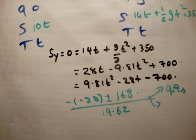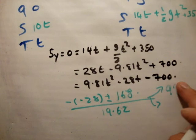So I'm just going to say 28 plus 168 divided by 19.62, give me a time of t equals 9.9 seconds, or 10 seconds, we'll say. Let's call that 10 altogether.